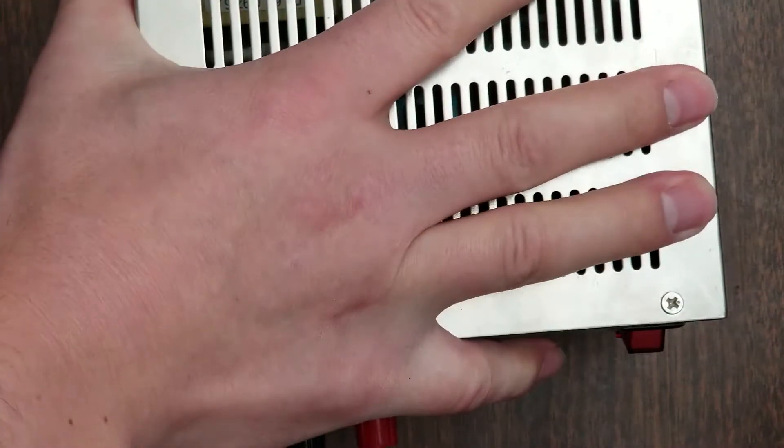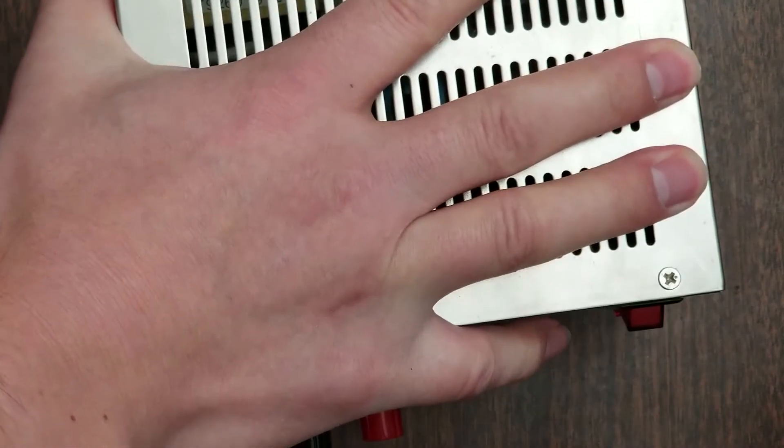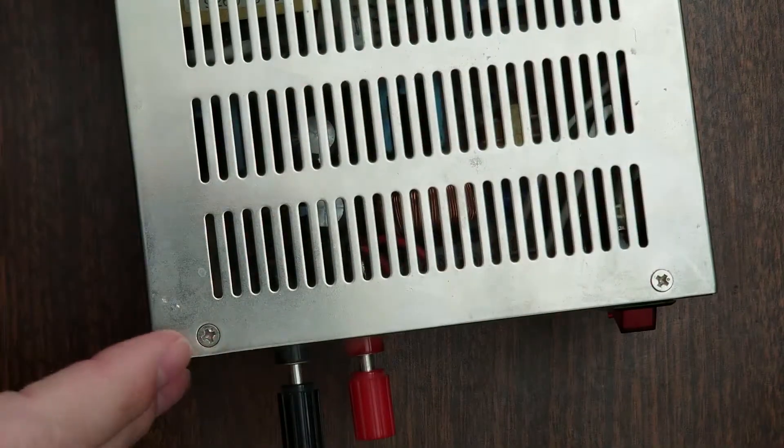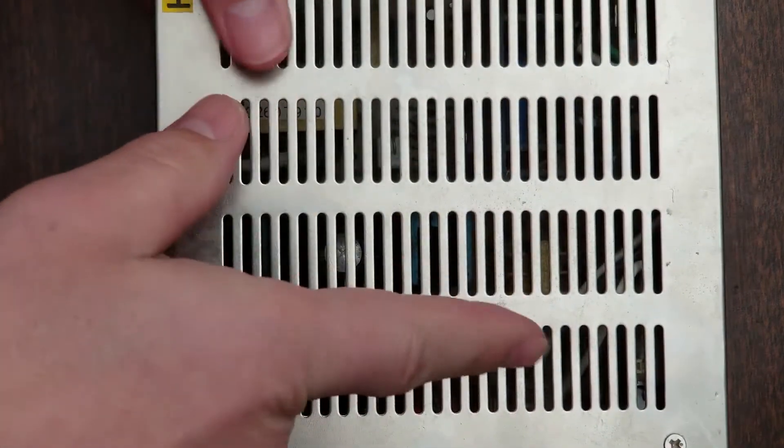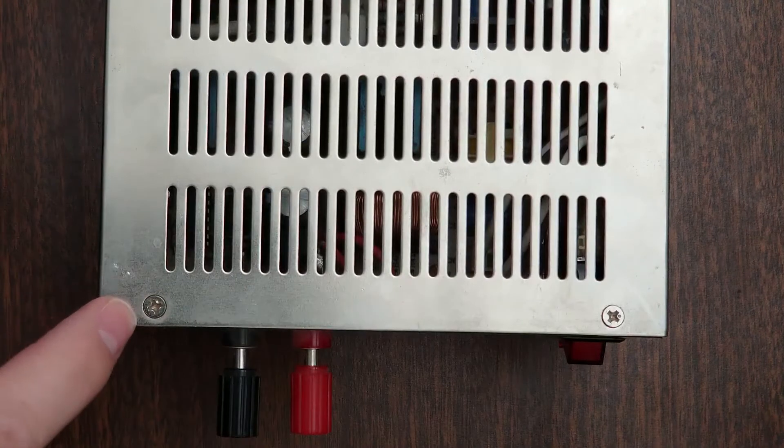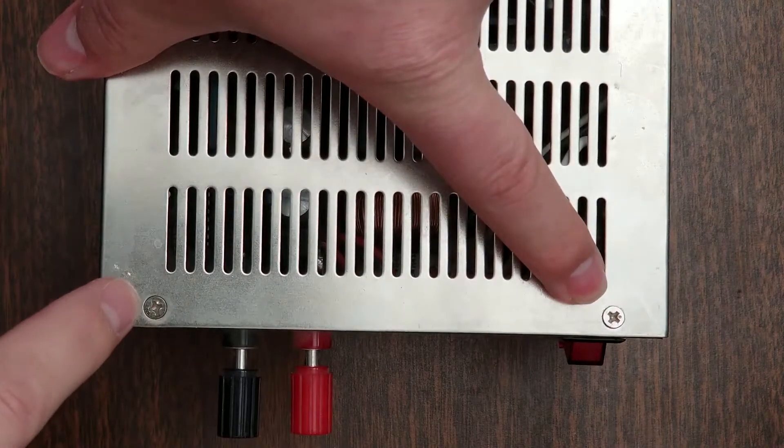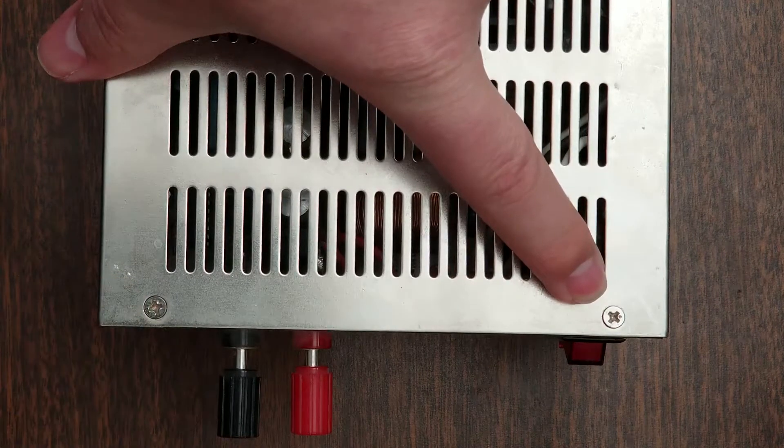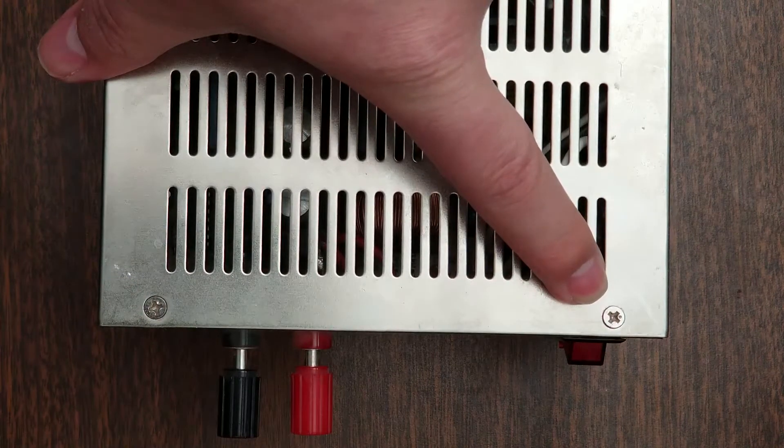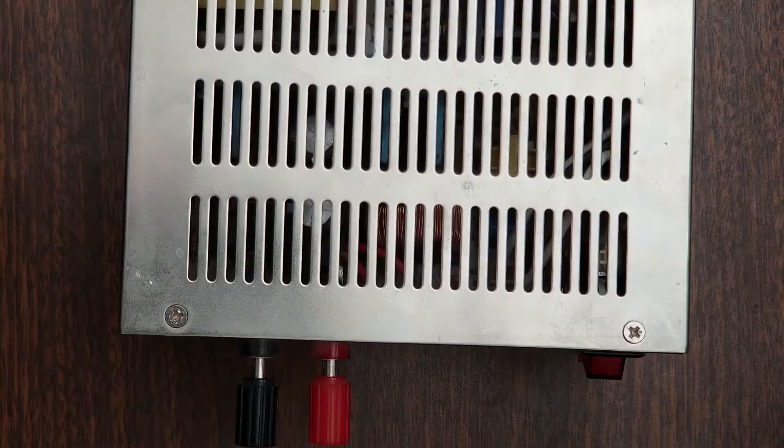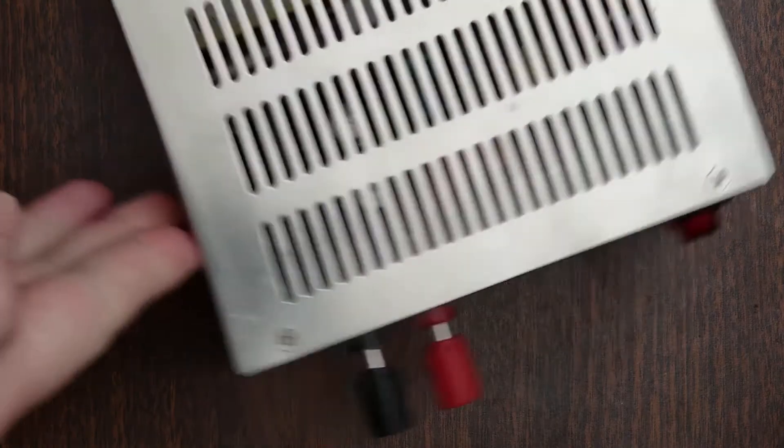Disconnect the power. Now there's just four bolts or screws at the corners. We'll just pull those out. I'm going to pause for a moment and do that and we'll come back and look inside.